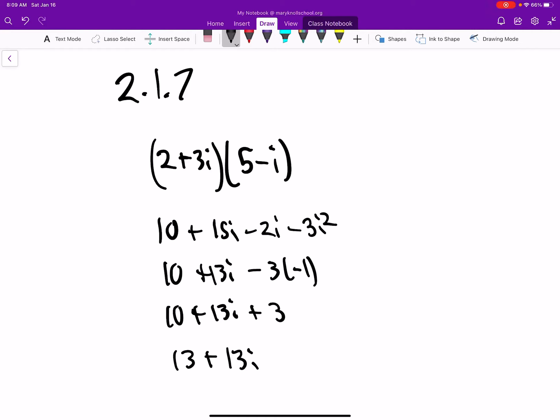Okay, 2.1.7, we're multiplying 2 plus 3i multiplied by 5 minus i.